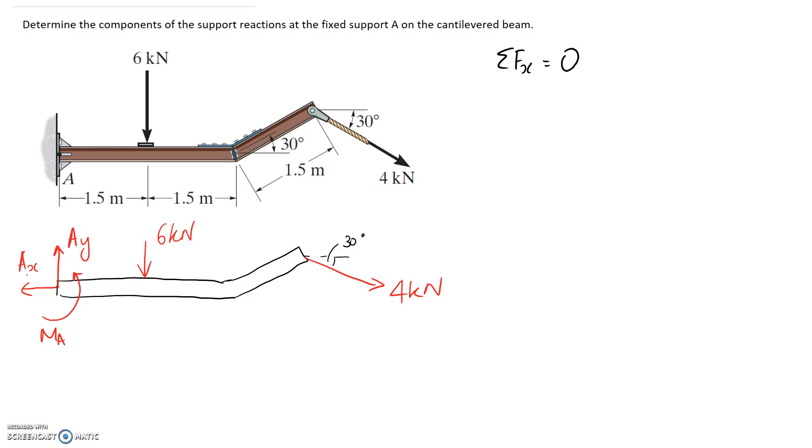So in the x direction we have negative Ax which we need to determine and we have a component of this. Its x component is pointing in the positive x direction so it's going to be plus and it's the cos side that we need.